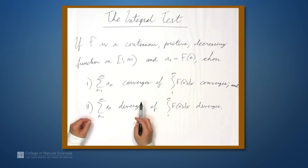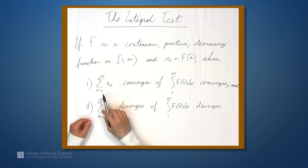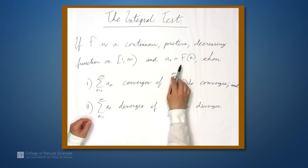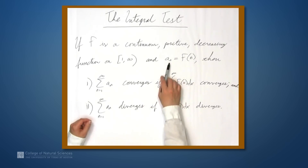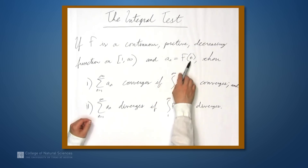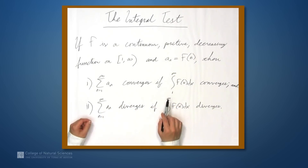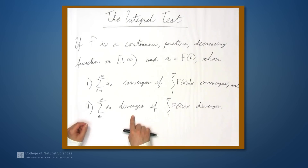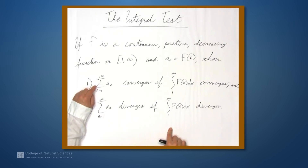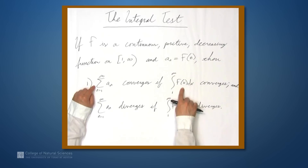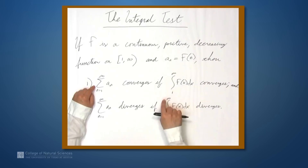In particular, if f is a continuous, positive, decreasing function on the interval from 1 to infinity, and a sub n equals f of n — in other words, the terms that form our series are given by the values of f at integers — then the series from n equals 1 to infinity of a sub n converges if the improper integral from 1 to infinity of f dx converges. Likewise, the series diverges if the same improper integral diverges. In other words, this series converges or diverges just as this improper integral converges or diverges.